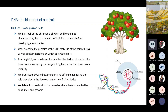Understanding the genetics and DNA makeup of the parents helps us make better decisions on which parents to cross. For instance, if I want to convey a specific trait and the DNA - the genes - are not in that specific cultivar, I will not be able to transfer it and it will not show in your fruit because it's not there. We can use the DNA to see whether desired characteristics have been inherited by the progeny long before you can see it in the fruit.